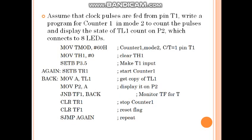There is a certain program in front of you. Assume that clock pulses are fed from pin T1, and write the program for counter 1 in mode 2 to count the pulses and display the state of TL1 count on P2, which is connected to 8 LEDs. In that program: MOV TMOD, #60H is used, meaning counter 1 in mode 2 is selected. TH1 is set to zero and Timer1 is started.